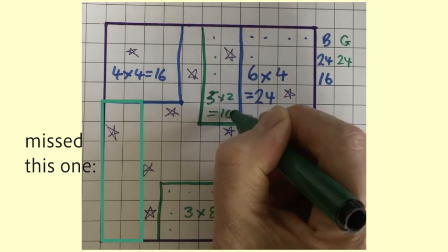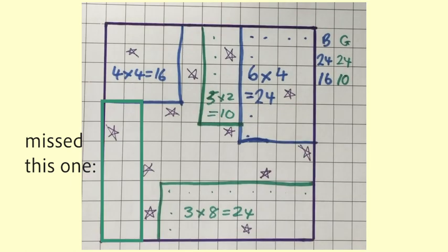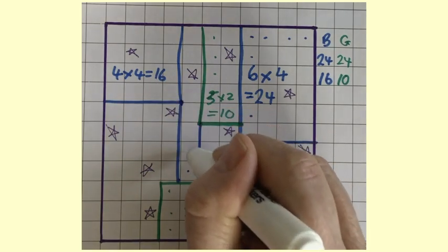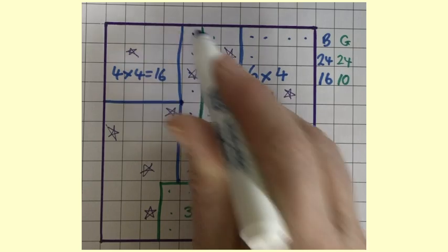Next it's blue's turn. Blue decides to do a very long, thin rectangle, which is eight by one. So that's eight.